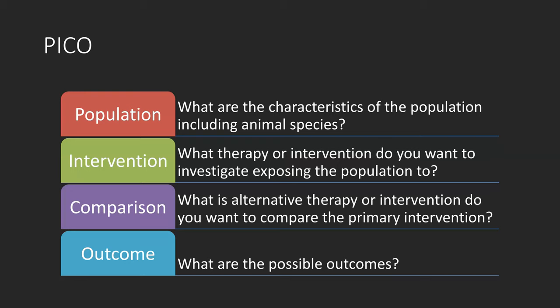Population: what are the characteristics of the population, including animal species? Intervention: what therapy or intervention do you want to investigate by exposing the population to? Comparison: what is the alternative therapy or intervention — do you want to compare the primary interventions? Outcome: what are the possible outcomes?